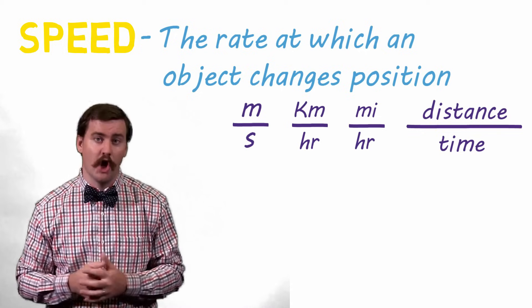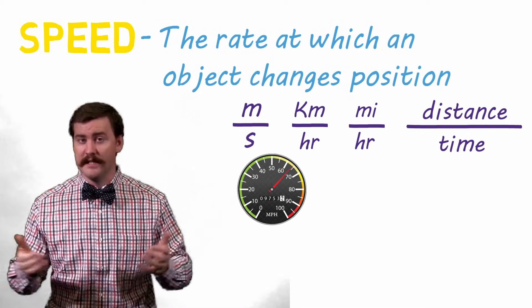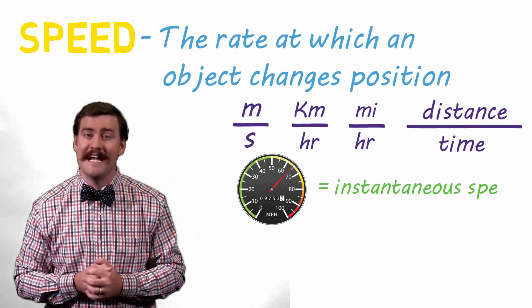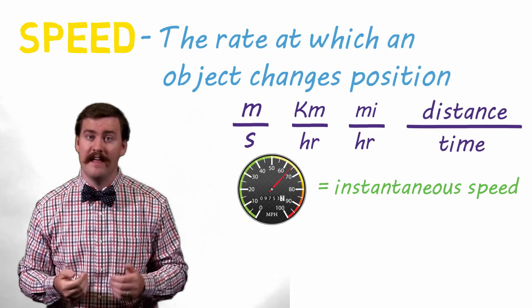So if you're driving in your car at 72 miles per hour, then that's your speed. In fact, it's your instantaneous speed, or your speed in that exact moment.